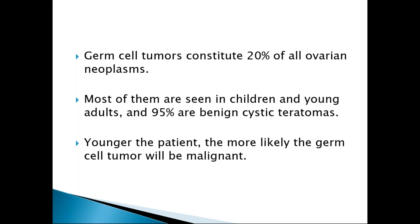Germ cell tumors constitute 20% of all ovarian neoplasms, and most of them are seen in children and young adults. 95% are benign cystic teratomas. As discussed in the last topic, benign cystic teratoma is also a germ cell tumor arising from the mature elements of the germ cells.